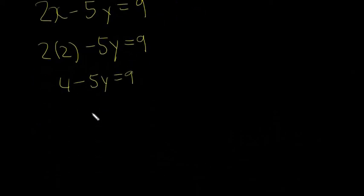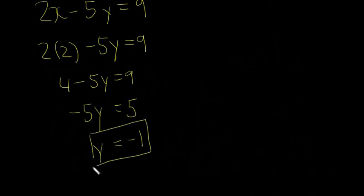Minus 5y is equal to 5, because that's going to be minus 4 on that side. And now y is going to be equal to minus 1, because I divide both sides by minus 5. So x is equal to 2, and y is equal to minus 1. So that's it. That's our simultaneous equation solved. You always have to get the x value and the y value.